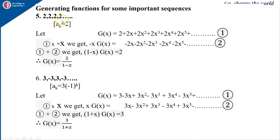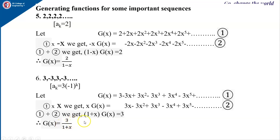We can also derive this by factoring out 2 from the sequence 1, 1, 1, 1, ... giving 2 · 1/(1−x). Likewise, for the sequence 3, −3, 3, −3, ... where a_k = 3·(−1)^k, we get g(x) = 3·(1 − 1 + 1 − 1 + ...) = 3/(1+x).